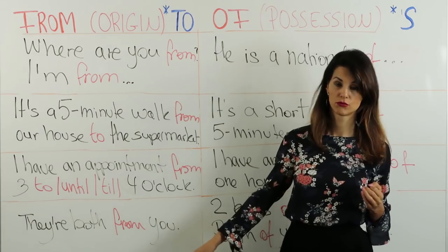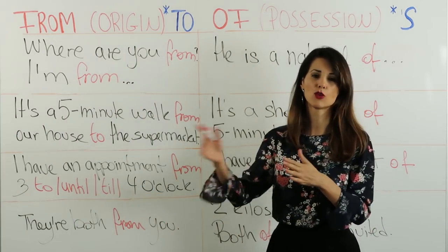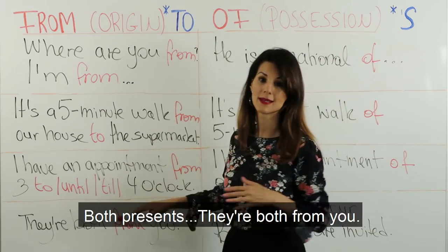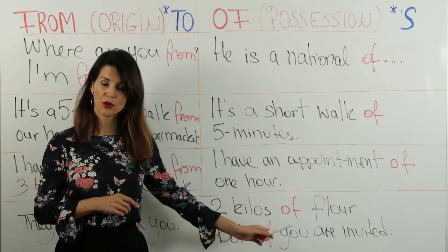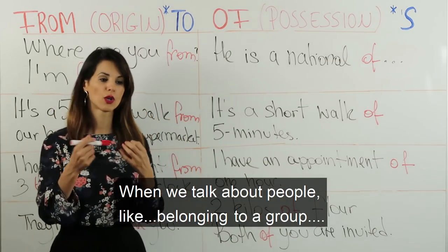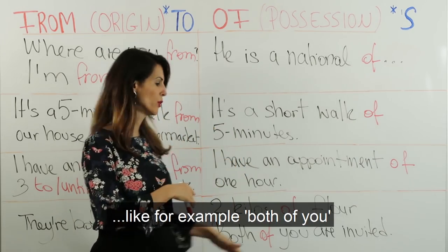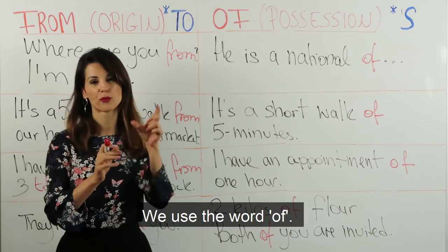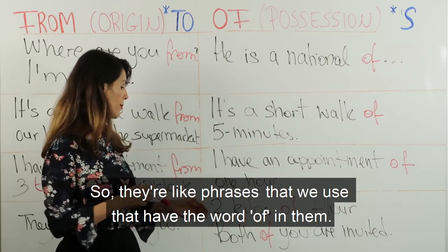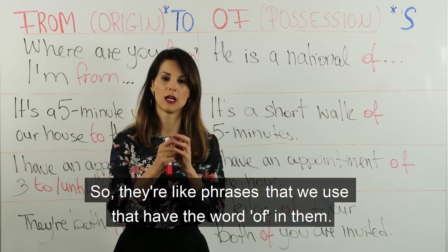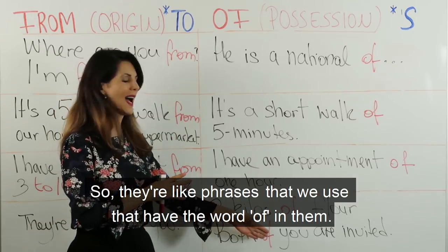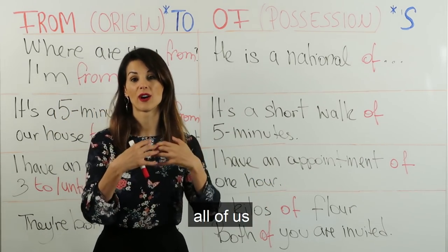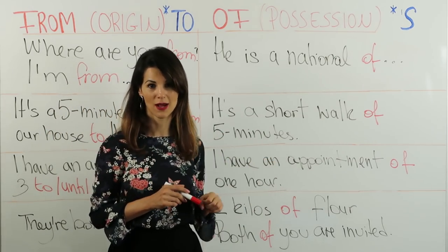Last example: 'They're both from you' — هتنيناتهم منك، مثلاً هديتين. Both presents — they're both from you. هالهديتين تنيناتهم منك. 'Both of you are invited.' When we talk about people belonging to a group, like 'both of you' or 'all of us', we use the word 'of'. فهاوتي كثيرة — لما عم نحكي عن مجموعة من أشخاص، منقول 'of' لأن هالأشخاص تتابع لهالفئة. 'Both of you' — تنيناتكن. 'All of us' — كلنا. 'Both of you are invited' — تنيناتكن معزومين.